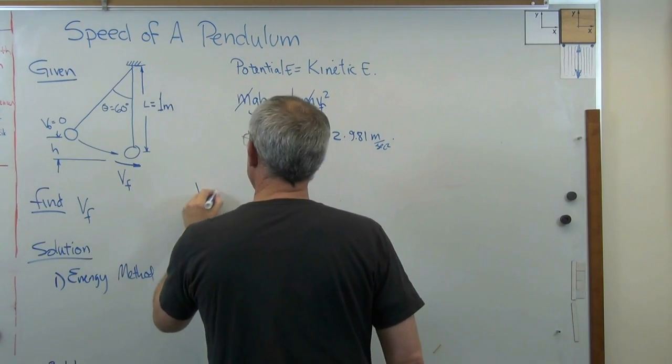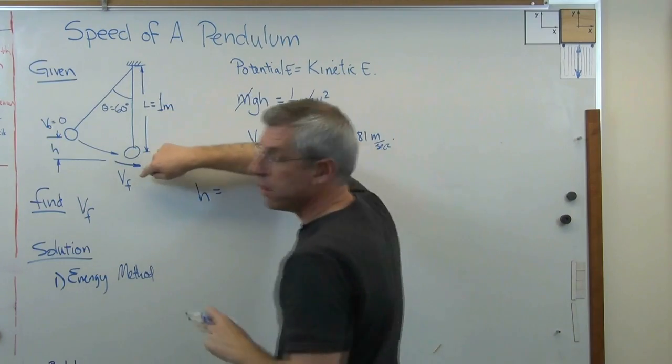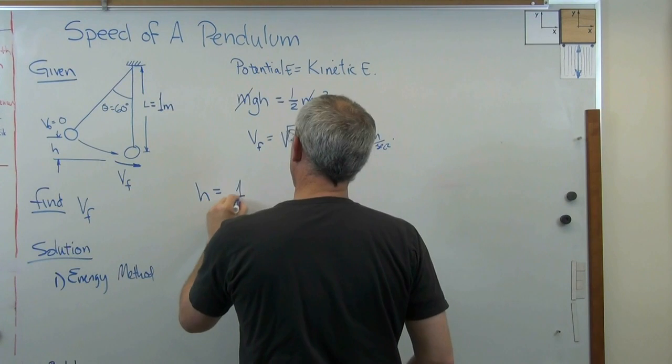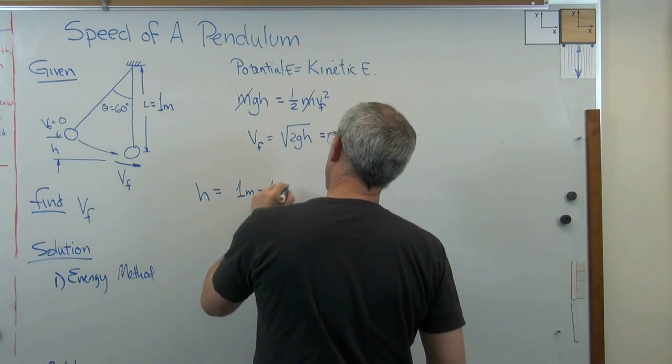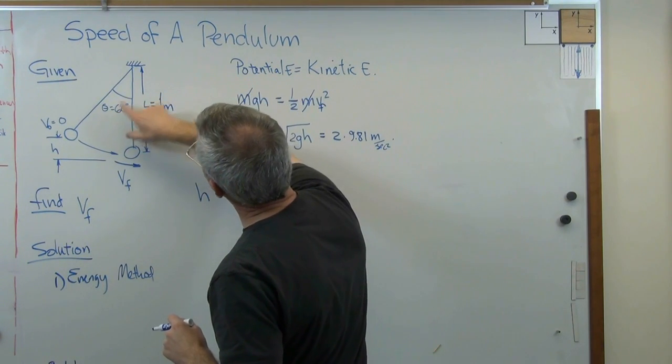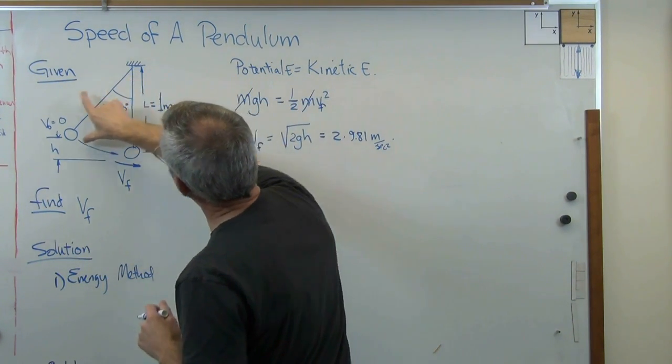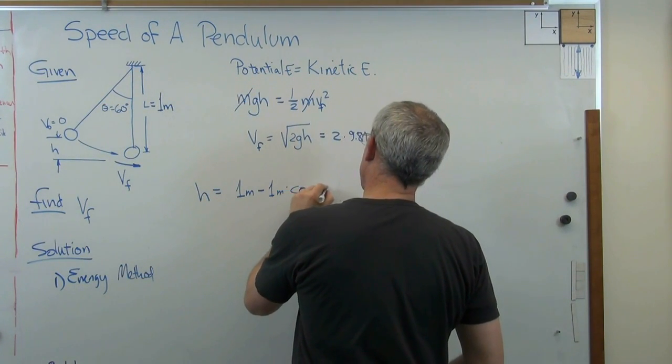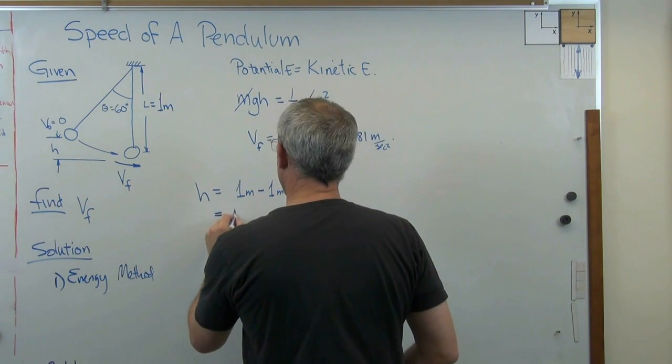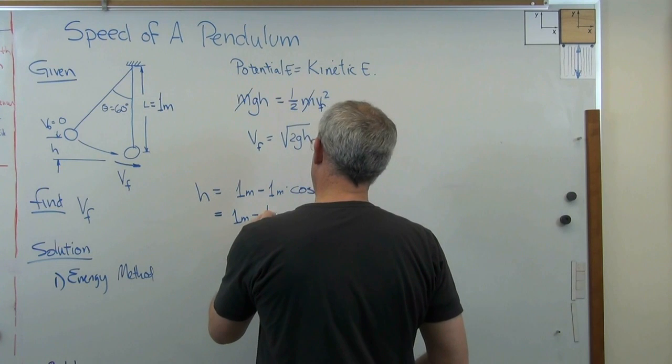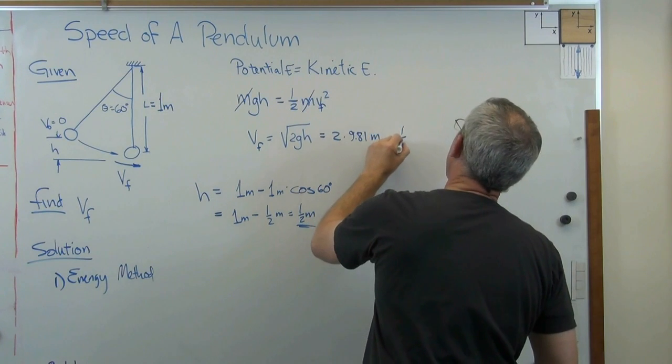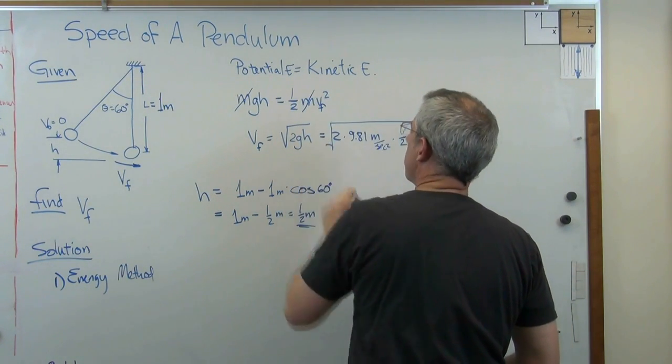h equals the length of the pendulum, right there, minus that distance right there. So that's 1 meter minus 1 meter times some trig unit there. If that's 60 degrees right there, cosine of 60 degrees is going to be that length. Cosine of 60 degrees, which happens to be 1 half. So that's 1 meter minus 1 half meter, so 1 half meter. That's pretty straightforward. So I'll put 1 half meter in there and take the square root of the whole thing.